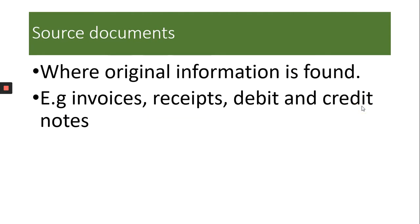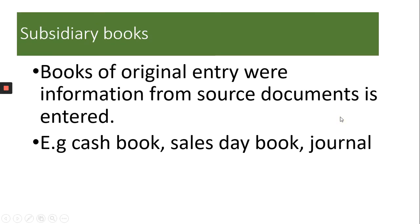We'll start with the source documents. This is where original information is found, such as the invoices or the receipts that you are given when you purchase something. The debit and credit notes are also types of source documents. That is where the original information is found.